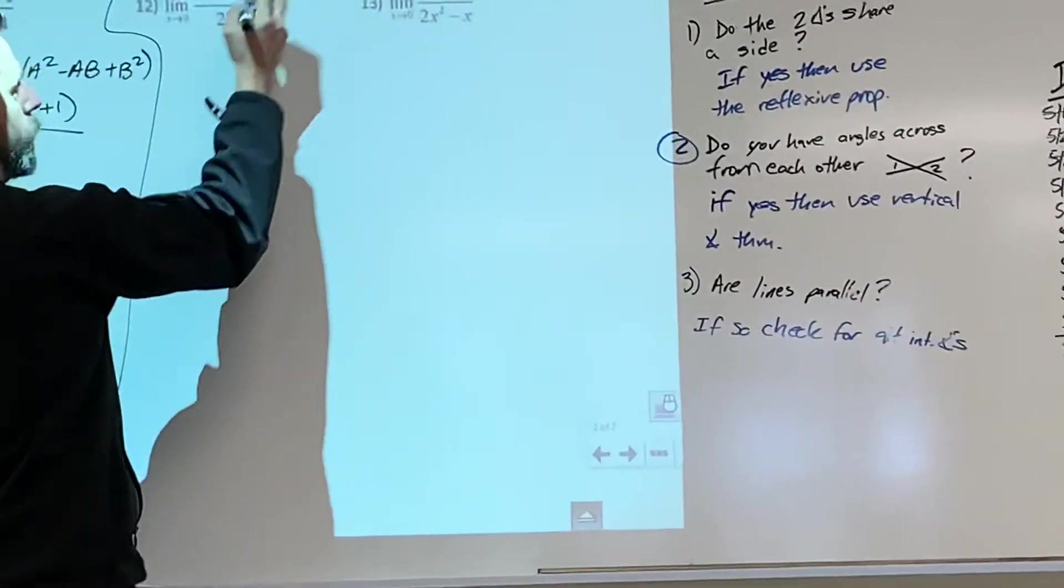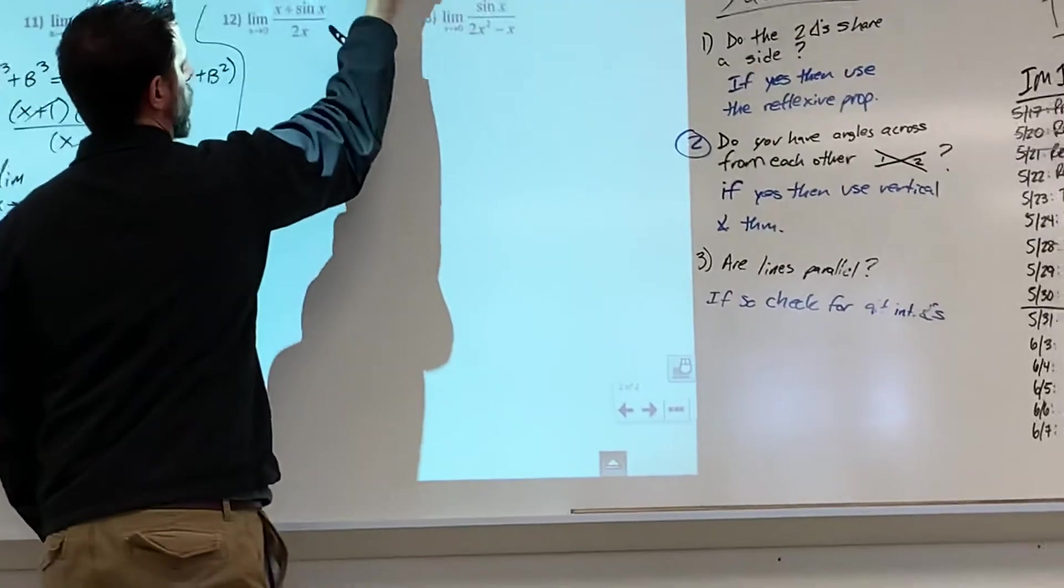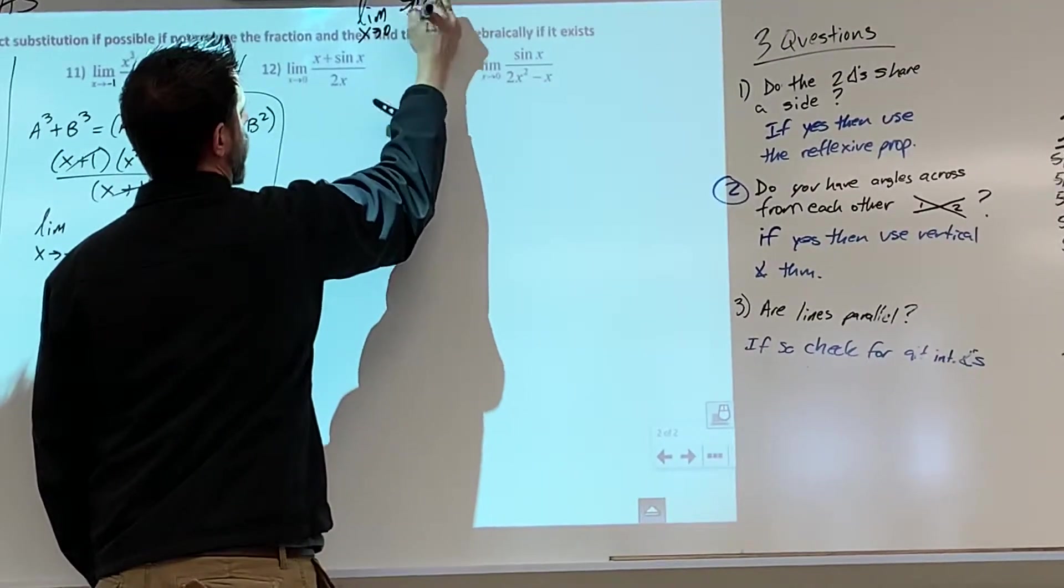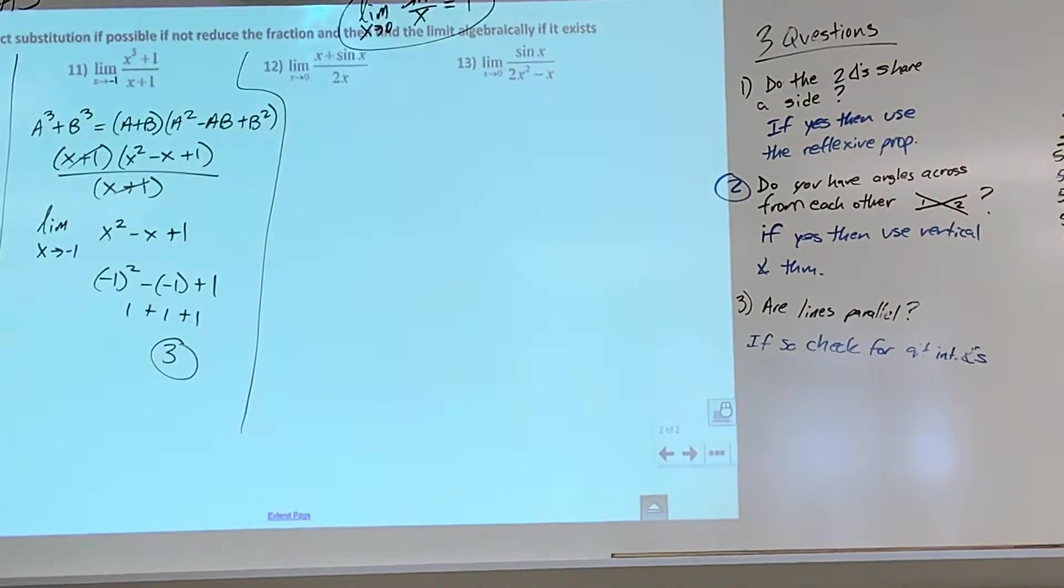We are going to take the information, we're going to take our previous knowledge that the limit as x approaches 0 of the sine of x over x equals 1. I am not giving you that formula, I expect that you memorize that formula as well.